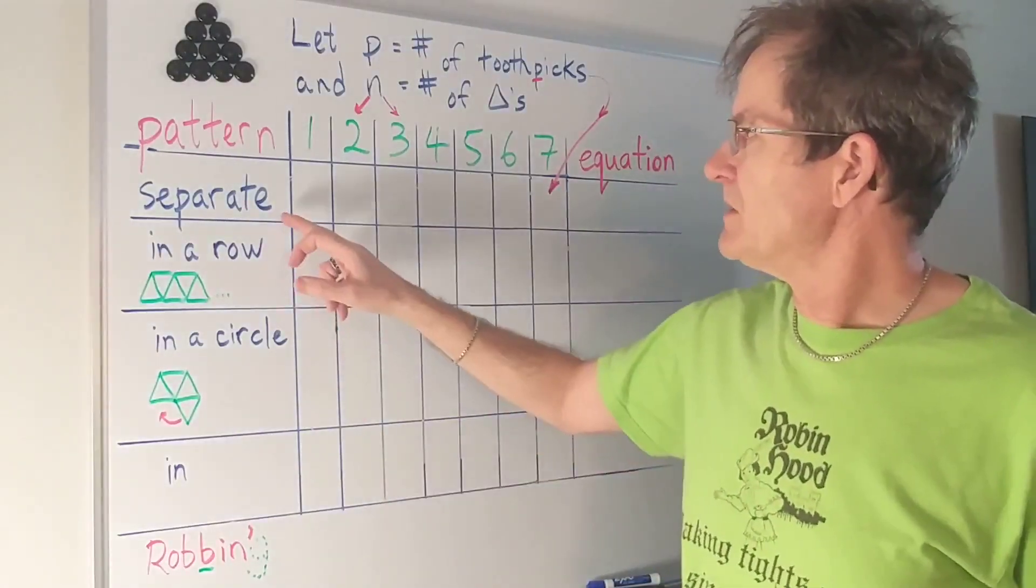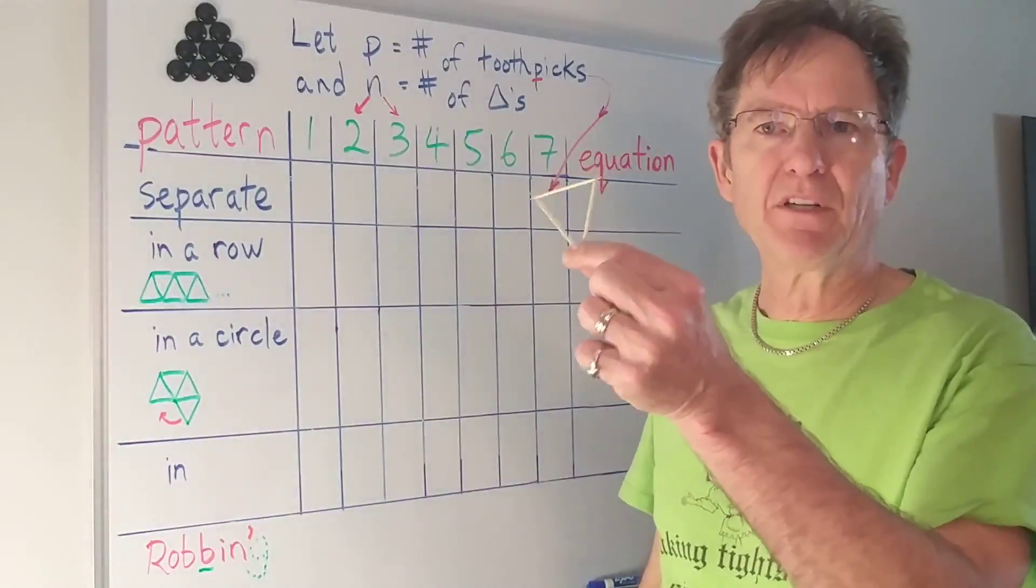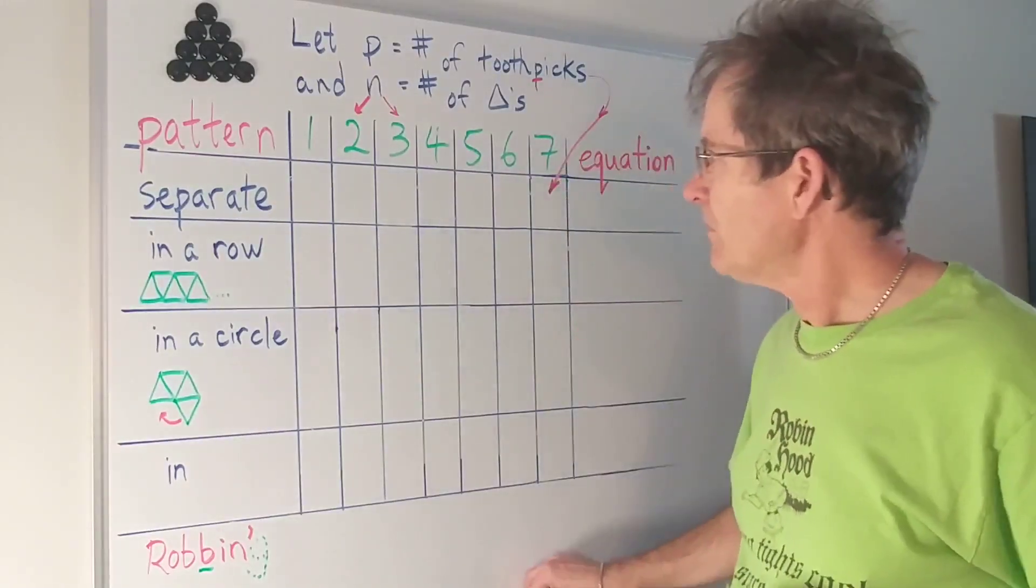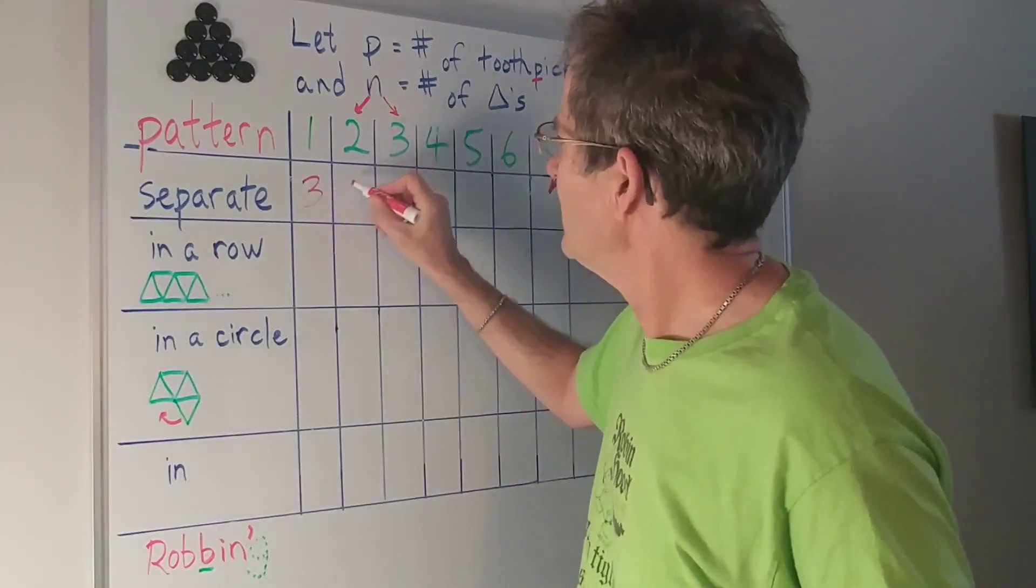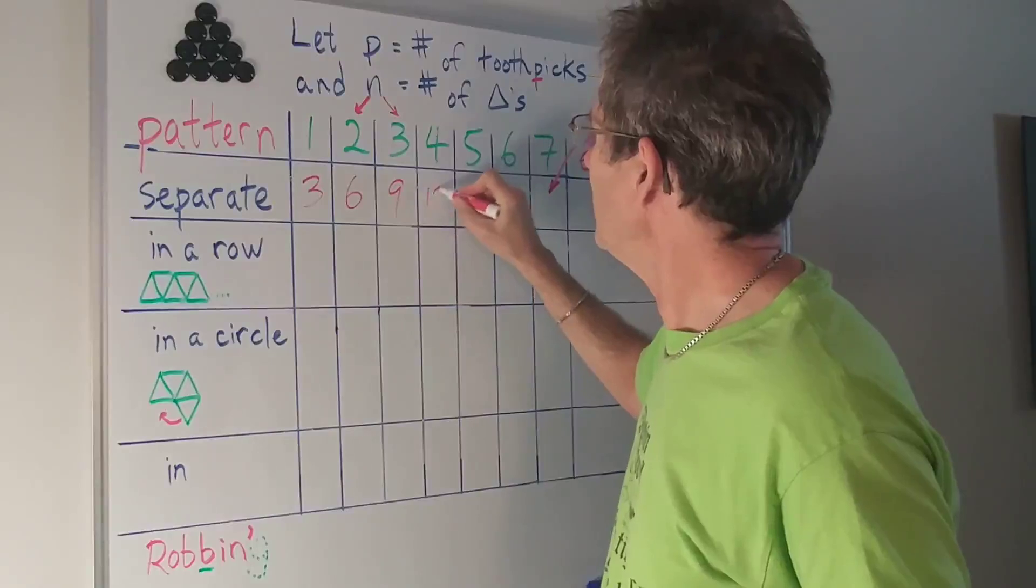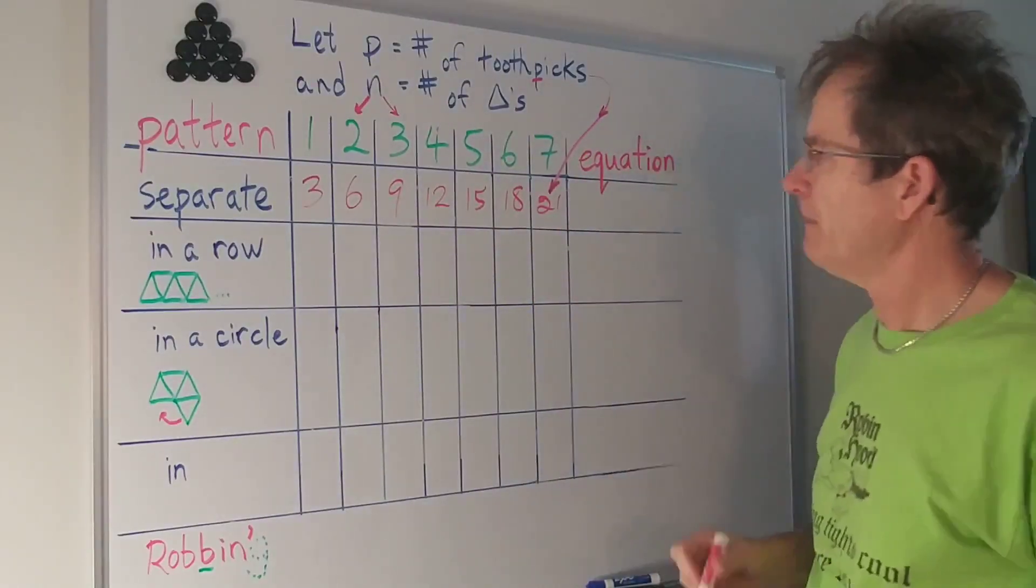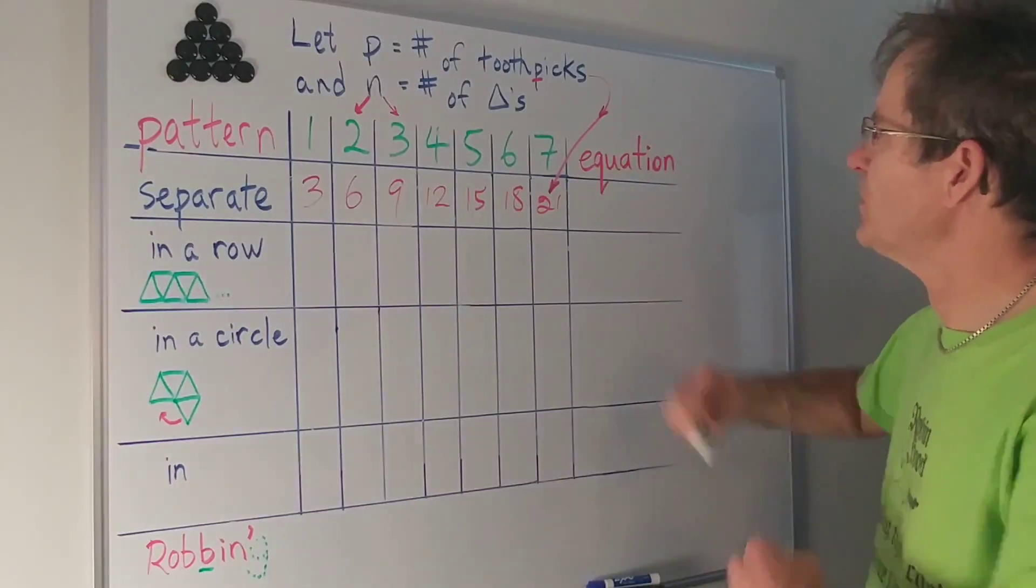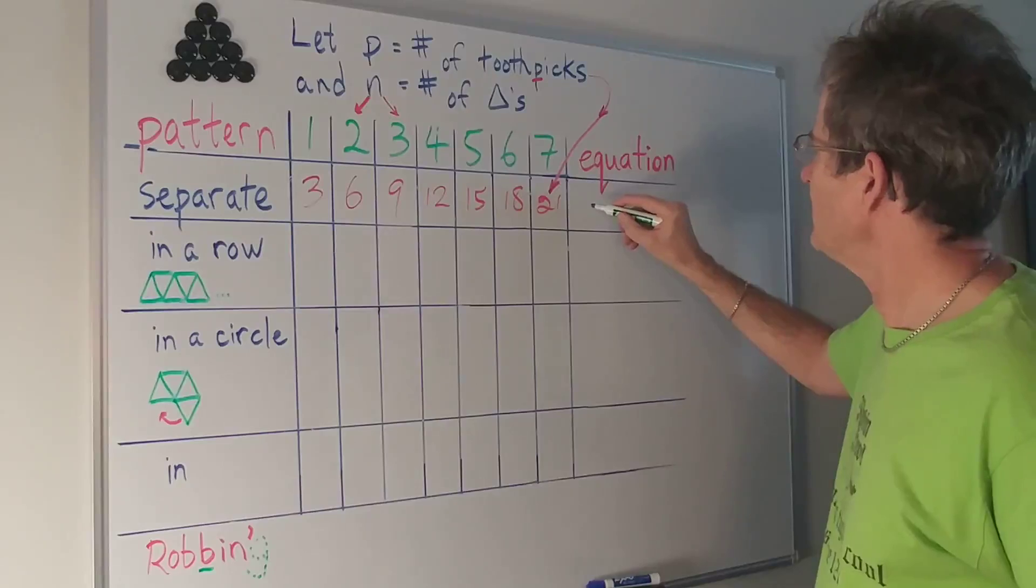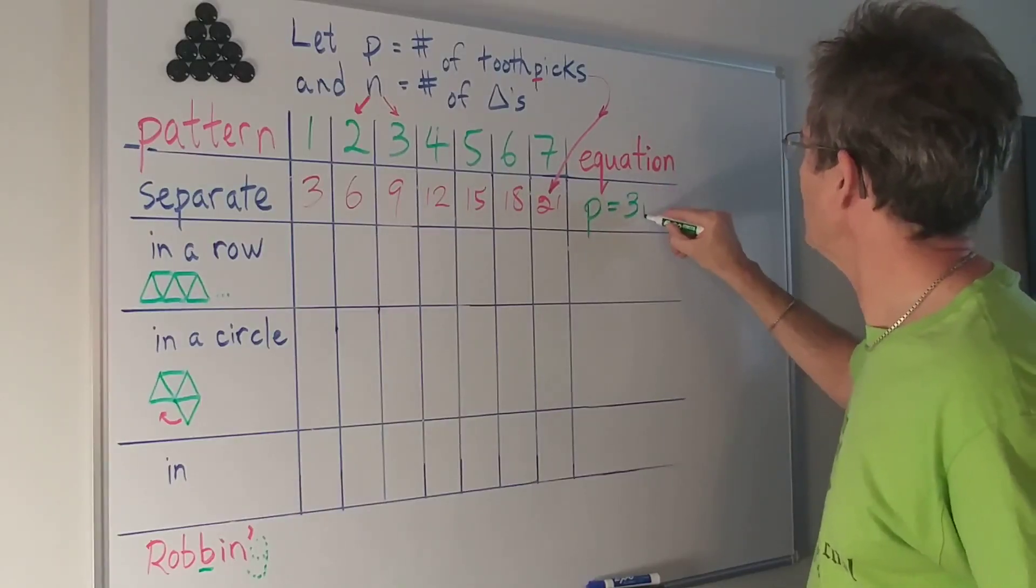So let's say the first pattern is that the triangles are all separate. Just make a whole bunch of them. So to make one triangle it would take three toothpicks then 6, 9, 12, 15, 18, and 21 because it takes three toothpicks for each triangle. So the equation would be the number of toothpicks is equal to three times the number of triangles.